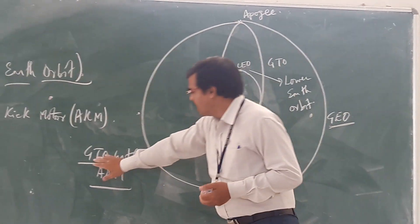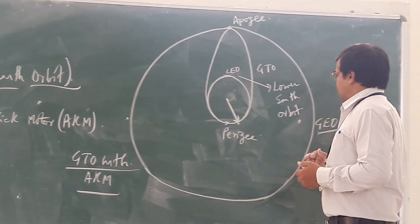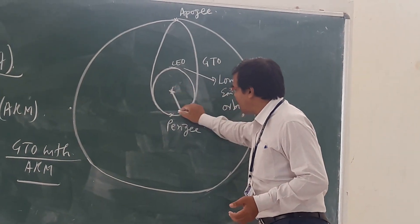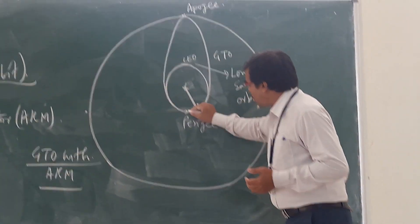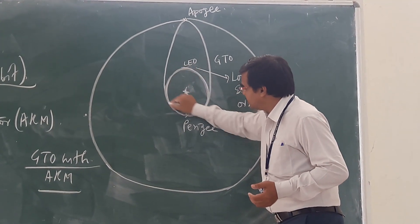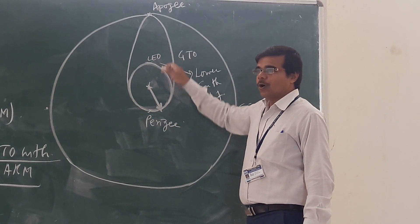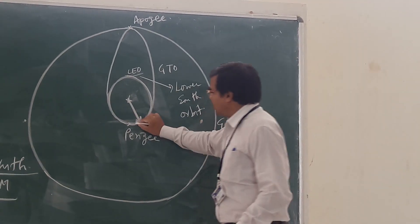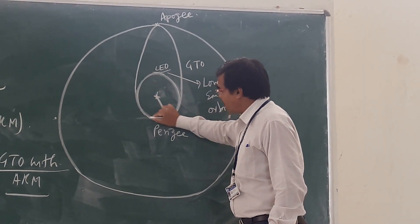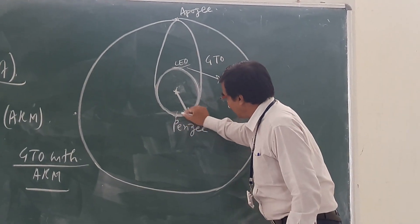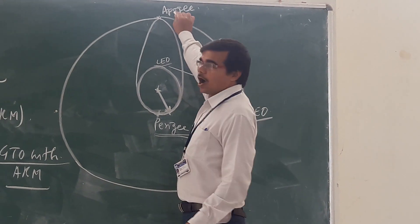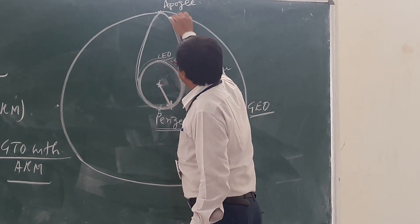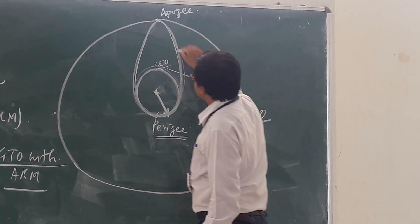The first method is the Geostationary Transfer Orbit with Apogee Kick Motor. From some point on the earth, we launch the satellite using a launch vehicle. After launching, it follows a path into lower earth orbit. When the satellite is moving in lower earth orbit, after one or two rotations, it changes its path and starts moving in an elliptical path — this is called the Geostationary Transfer Orbit.